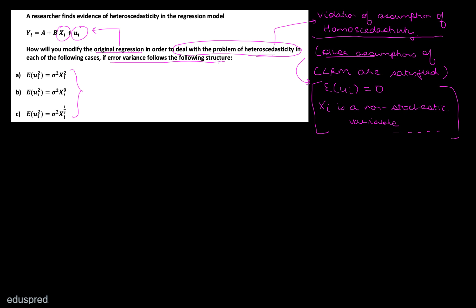The second thing I want you to note is that the question says 'modify the original regression,' referring to the regression equation given. Also notice the last line: the error variance follows the following structure, but in the parts they have not written Var(ui) on the left-hand side — they have written E(ui²). So the question is: why E(ui²) instead of Var(ui)? Well, E(ui²) and Var(ui) are one and the same thing in this case.